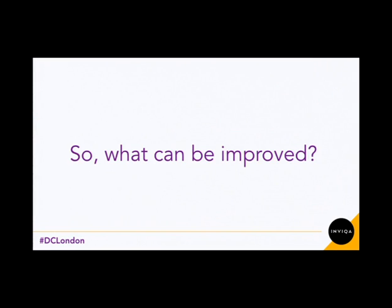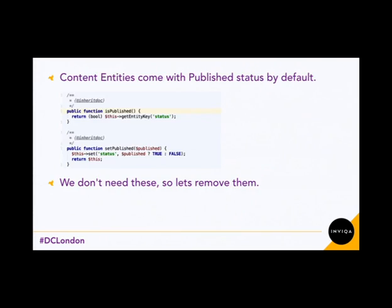That looks a little bit plain, so I've added some CSS. And there we go — we've got something that resembles an FAQ. So what can we improve on this? With Drupal Console, it's boilerplate code, so everything it generates you don't have to keep. One thing I noticed is that content entities come with a published status by default. I don't need this because I'm not defining if this is published or unpublished — it just seems like code I don't need, so I'm going to remove it.